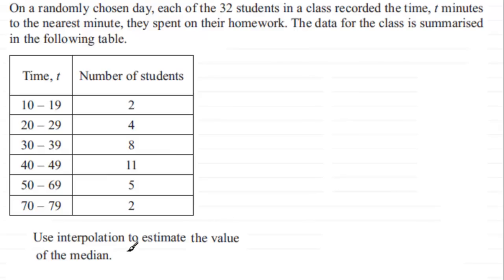We're dealing with continuous data, so we have 32 students and we're looking for the 16th value. Where is the 16th value going to be? If we come down through the list here, we see that we've got two values which are less than or equal to the upper bound for this interval, which is going to be 19.5.